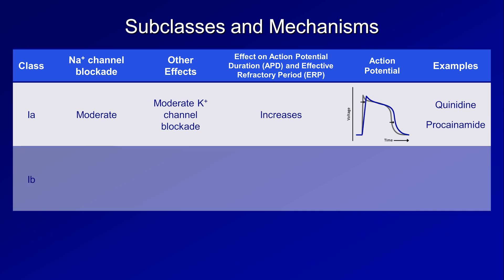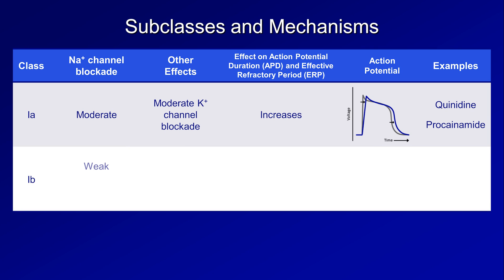Moving on to the 1b drugs, these have relatively weak effect at blocking sodium channels, but their effect is most prominent in already depolarized tissues that can be seen in ischemia. So these drugs can be helpful at treating arrhythmias in the setting of angina or acute MIs. When it comes to the action potential duration and effective refractory period, 1b drugs decrease them slightly.